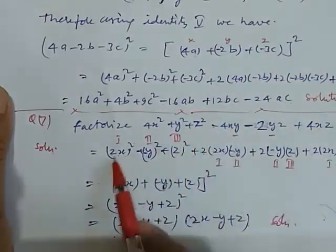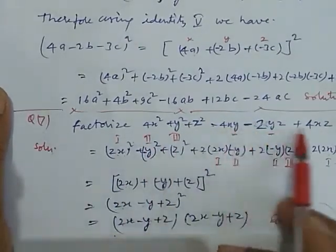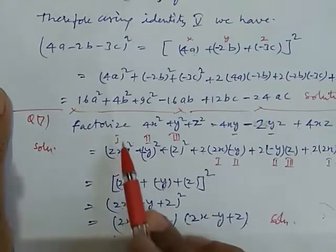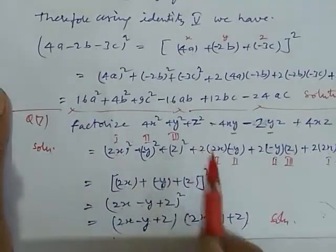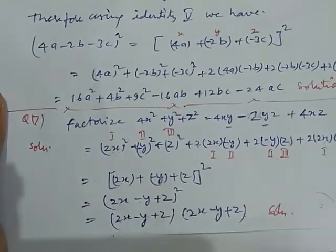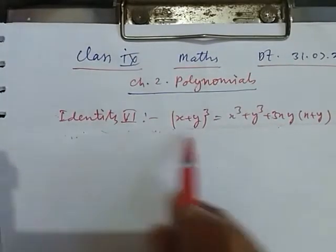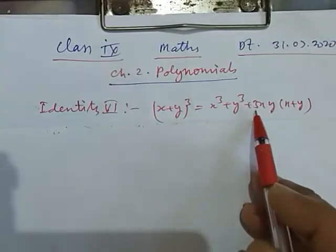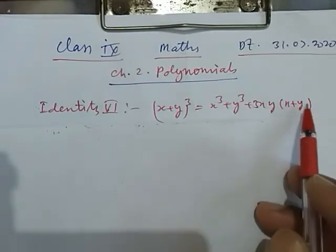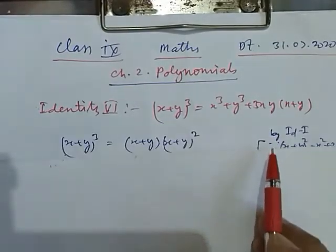Now we take the next problem. Here our identity six: x plus y whole cube equals x cube plus y cube plus 3xy into x plus y. First, we solve how this identity comes. Here is our x plus y whole cube, written as x plus y into x plus y into x plus y — multiplying three times. So, here we write x plus y and the two times of x plus y, that is x plus y whole square. So, two and one make three.